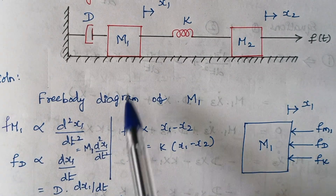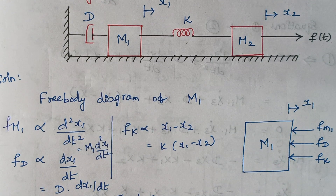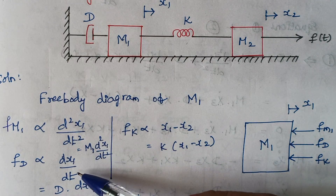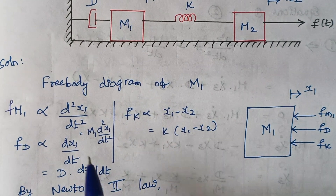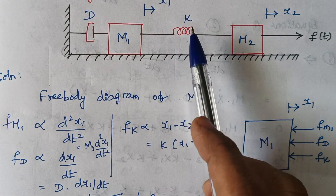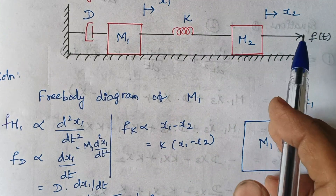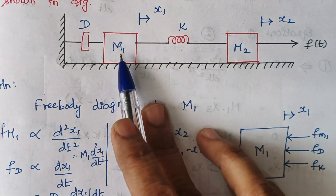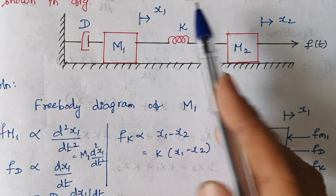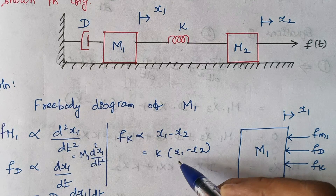Next consider d. Here d is connected only to mass m1, so the opposing force produced by d is directly proportional to dx1/dt. When you introduce the proportionality constant, it is d × dx1/dt. And next is k: the opposing force produced by k is given by the difference x1 minus x2, because k is connected between m1 and m2. As we are considering m1, x1 should come first, so it is k(x1 − x2).